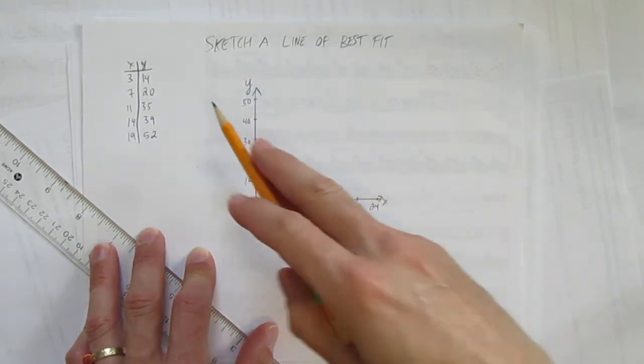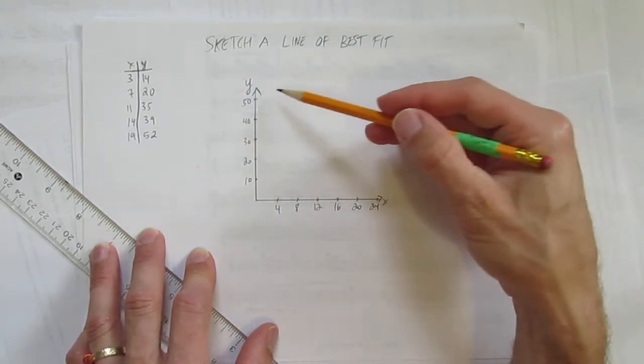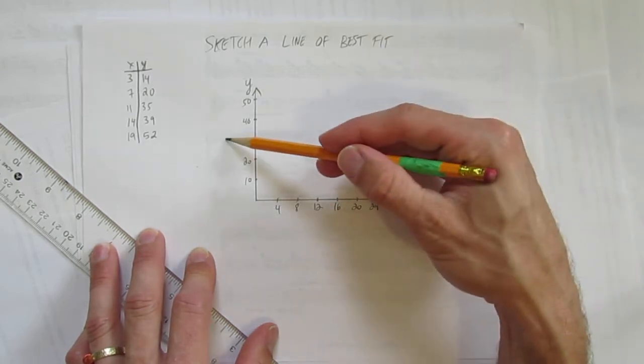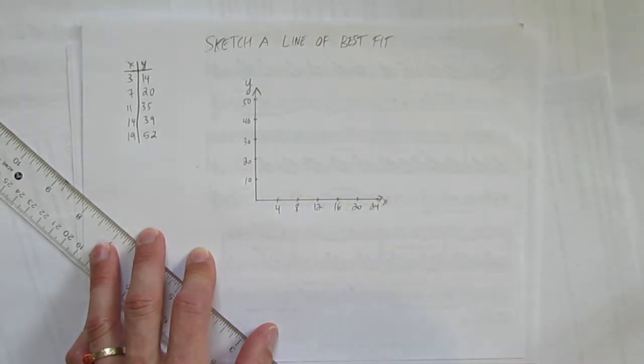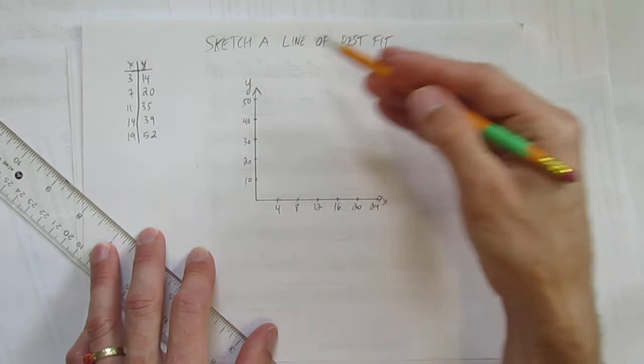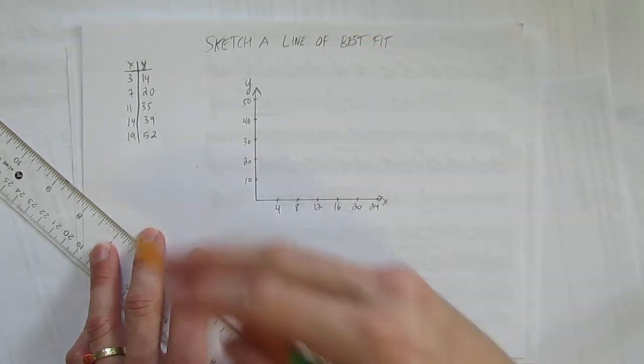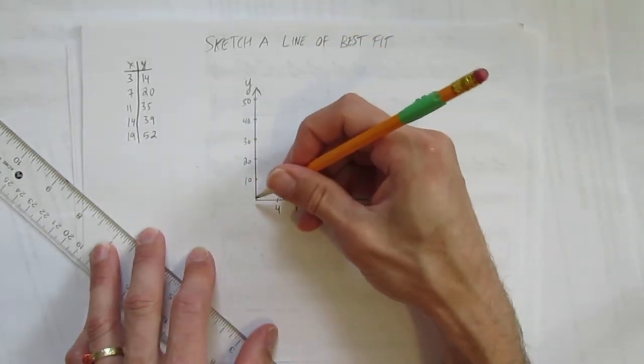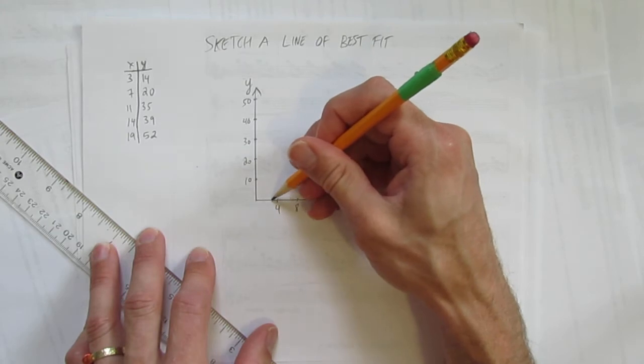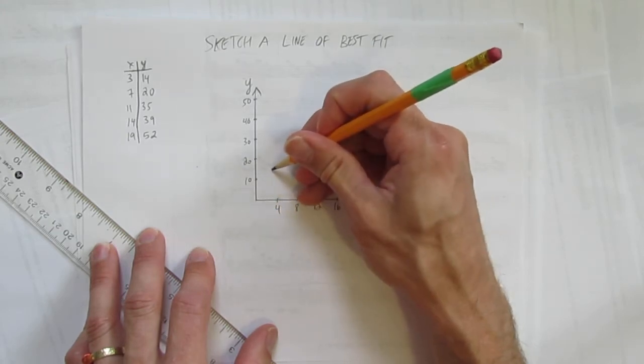And if this were a word problem, like height versus time, make sure to put a title, height versus time, and label height here, label time here. But right now we're just looking to sketch this line of best fit, so I'm going to put my points.